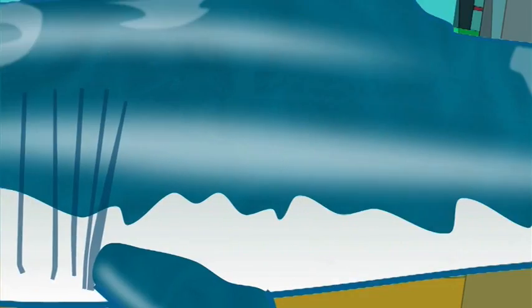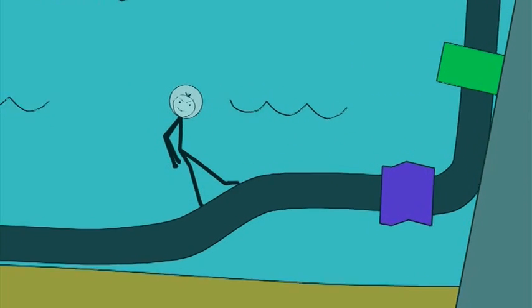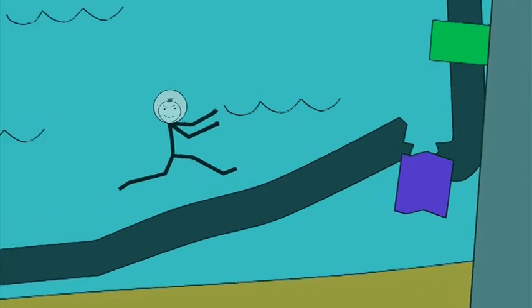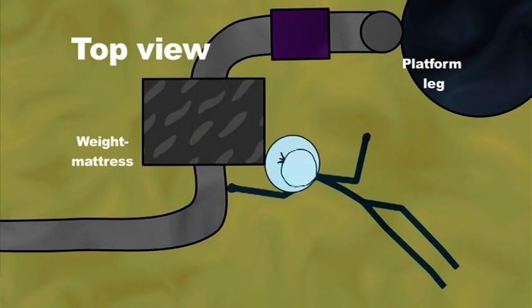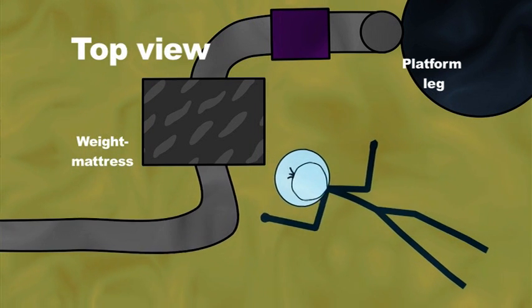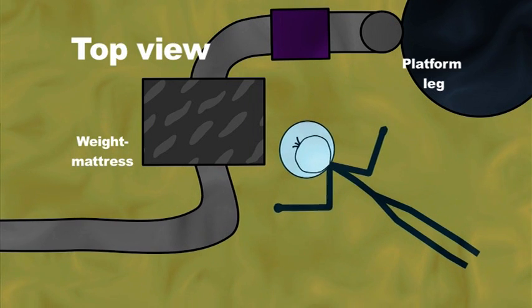Through expansion, the riser stub was pushed towards the platform leg, ending in a failure of the pipeline, an interruption of production and an environmental disaster. This could have been considered beforehand and avoided by proper analysis of alternative shapes of the riser tie-in structure and by placing a weight mattress,